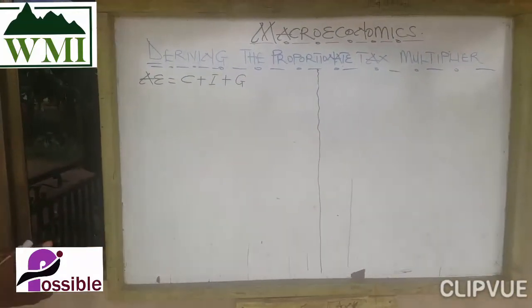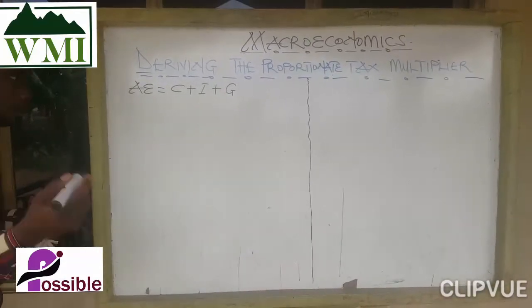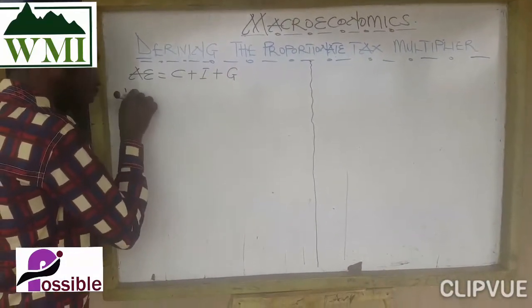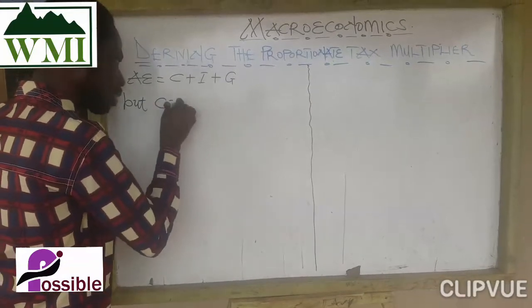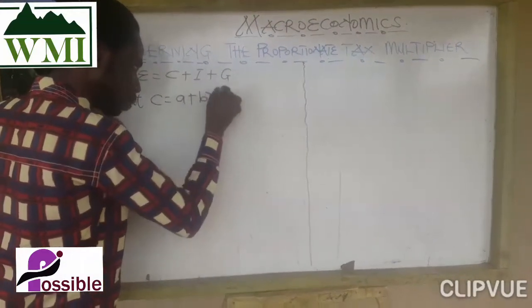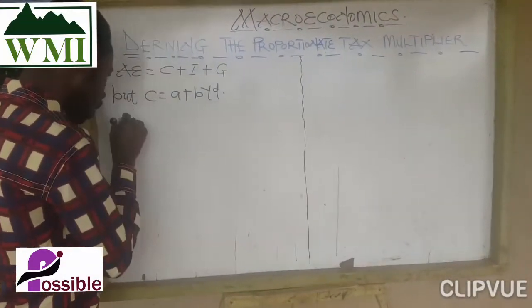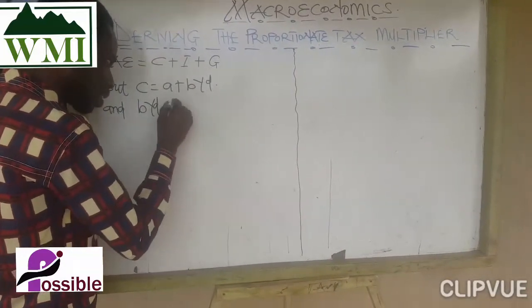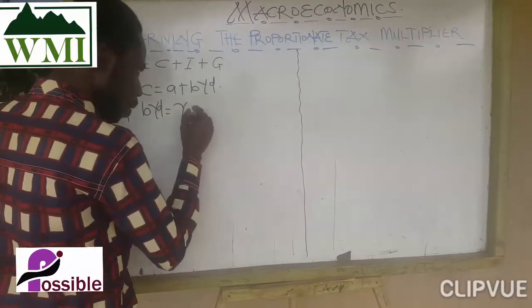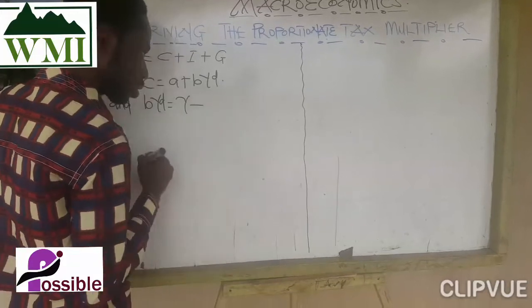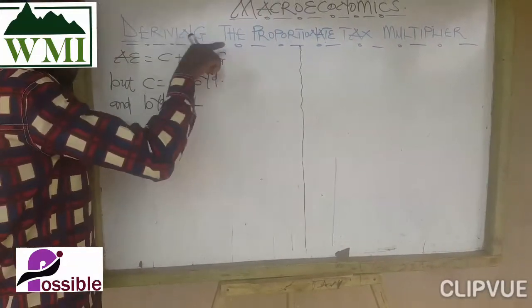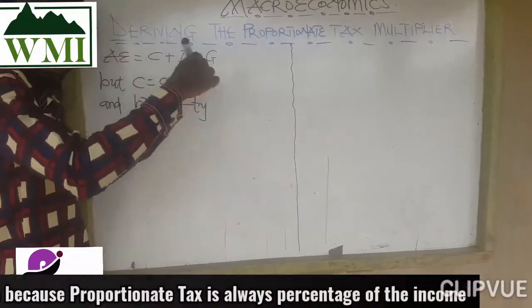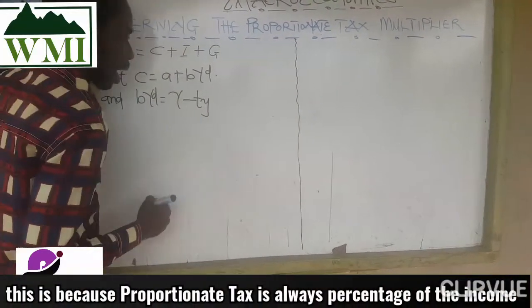So we are going to look at how it is computed. Aggregate expenditure is equal to this. Consumption is equal to A plus BYD, and YD is income minus tax. But under proportionate tax, the tax is TY — we don't write capital T, it is tY.